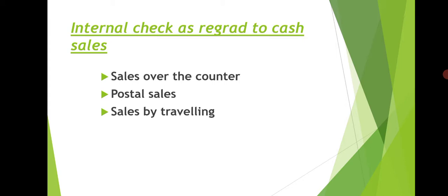For sales by travelling agents, the agent should be allowed to issue rough receipts to customers for cash received on sale of articles. Final receipts should be issued only by the head office. The agent should submit periodical statements of sales and remit the entire proceeds to the head office or deposit cash daily in a bank. Agents should not be allowed to deduct their commission out of sale proceeds. The head office should maintain a list of debtors and send reminders to customers who have not cleared their debts.